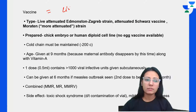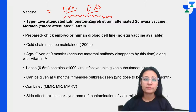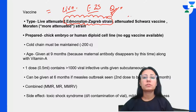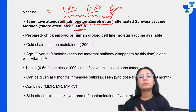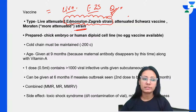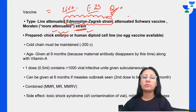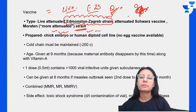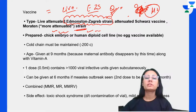Regarding the measles vaccine: the strain used is the Edmonston-Zagreb strain — the most important one. Other strains include the Schwartz strain and the Moraten strain. The vaccine is prepared from chick embryo and human diploid cells. No egg vaccine is available for measles. The cold chain must be maintained, and the vaccine is given at 9 months because maternal antibodies disappear by this time. It is given along with vitamin A.